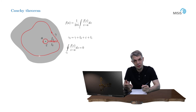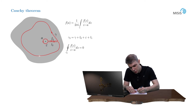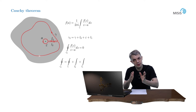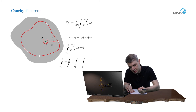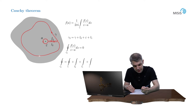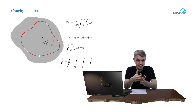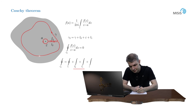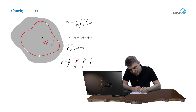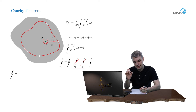Now let's expand the gamma1 contour into its component segments. We have the integral over closed contour gamma, plus the integral over the two linear segments L2 and L1 — which are infinitely close to each other but passed in opposite directions — plus the integral along the infinitesimal circle epsilon passed in the clockwise direction. Since L1 and L2 are infinitely close and passed in opposite directions, they cancel each other. So we obtain that our initial closed contour integral over gamma equals minus the integral along the infinitesimal circle epsilon in the clockwise direction.